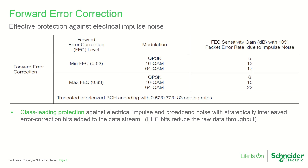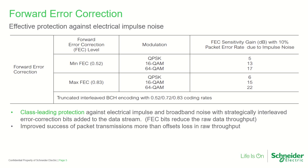FEC has been optimized for correction of data errors caused by electrical impulse noise, which is a type of RF interference as found in electrical substations and next to electrical distribution switchgear and large motors. The improvement in successfully transmitted packets more than offsets the loss in available bandwidth.